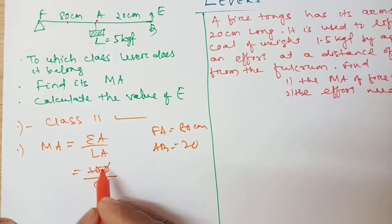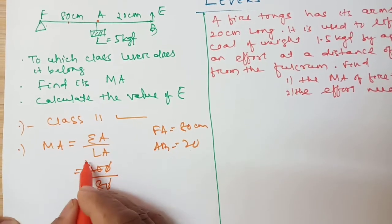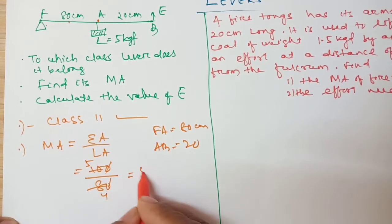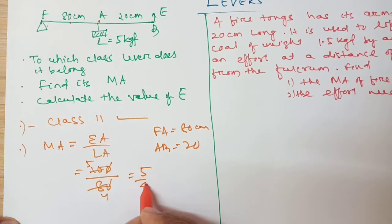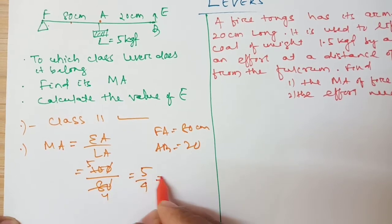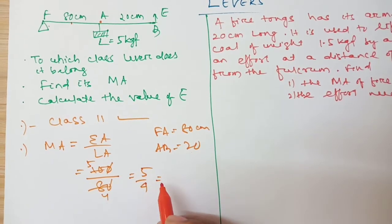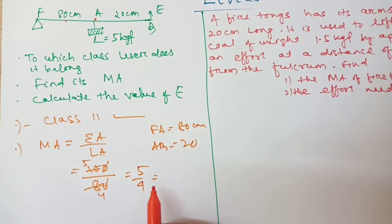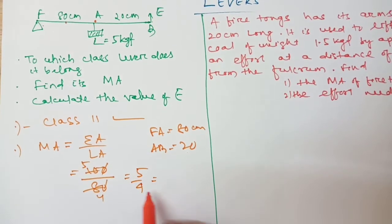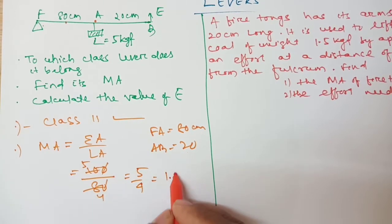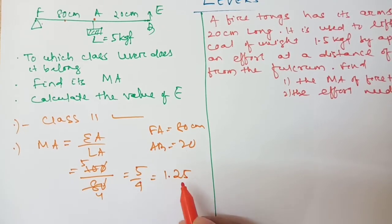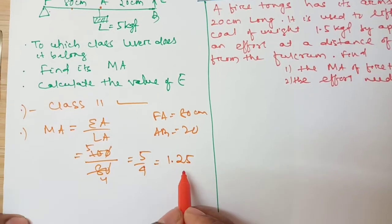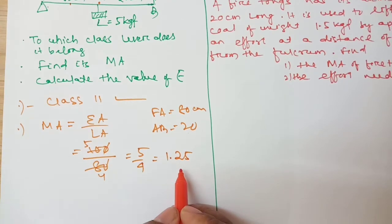After cancellation, 100 by 80 simplifies to 5 by 4, which equals 1.25. So the mechanical advantage is 1.25.